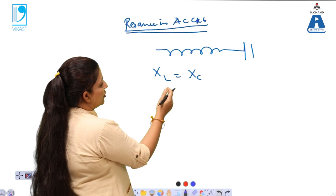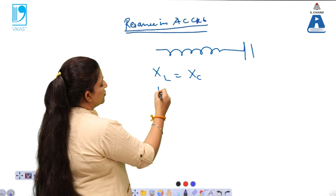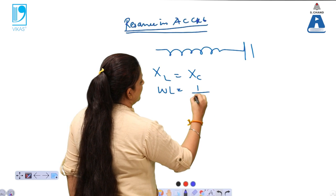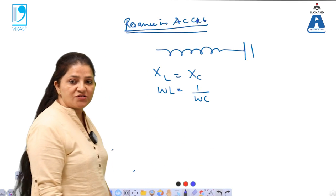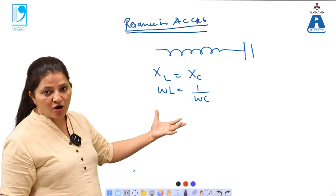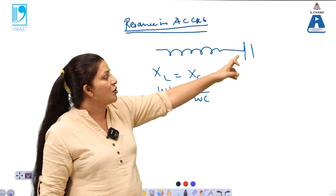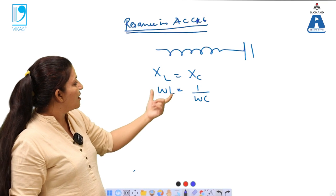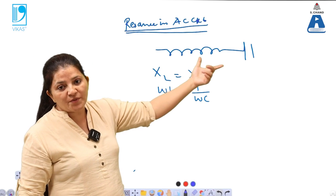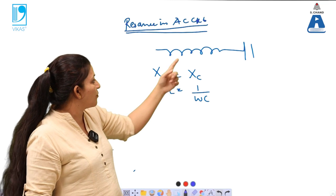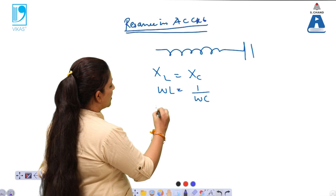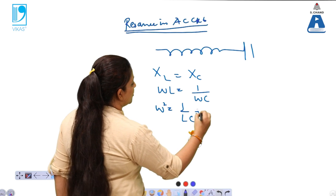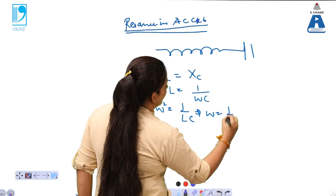Now substitute the values: XL equals omega times L, and XC equals 1 divided by omega times C. When the voltage drop across the inductor and across the capacitor are equal — that is the condition of resonance. When both are in series, their reactances are equal, which implies omega squared equals 1 divided by LC, and therefore omega equals 1 divided by the square root of LC.